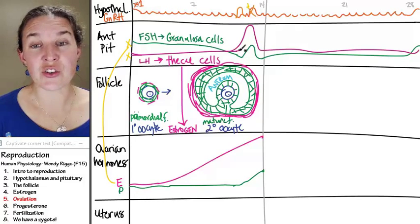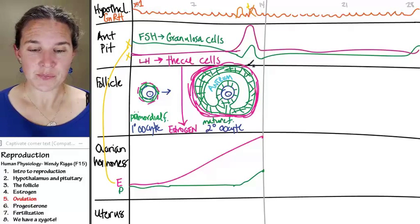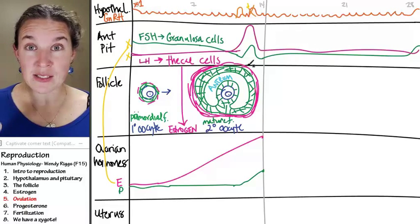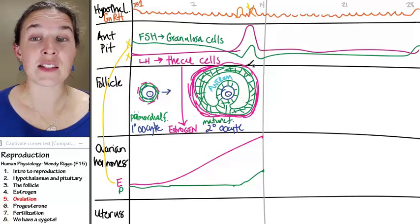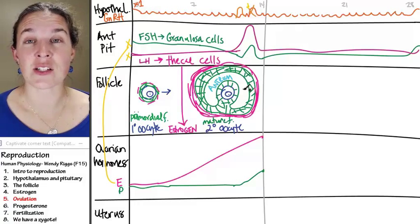And here's the scoop. The surge of luteinizing hormone, when that happens, it is guaranteed within 12 to 24 hours of that surge, ovulation is going to happen.